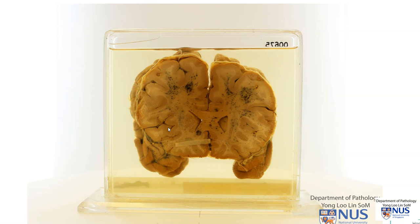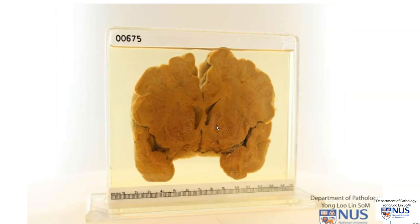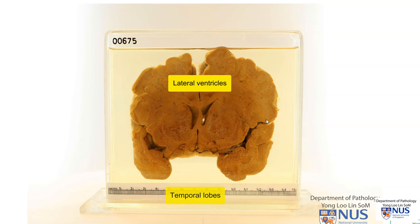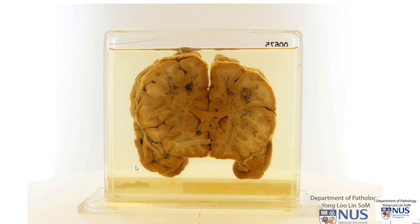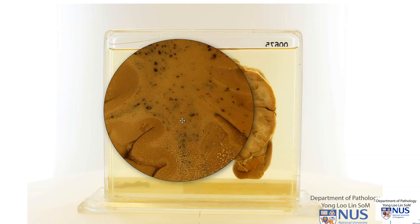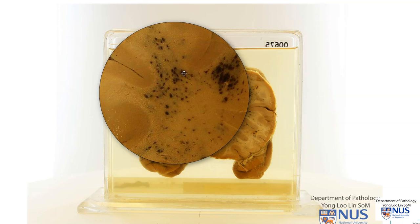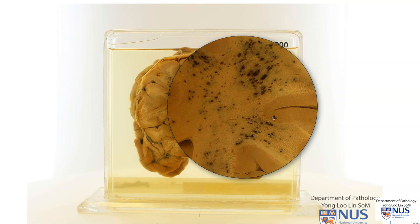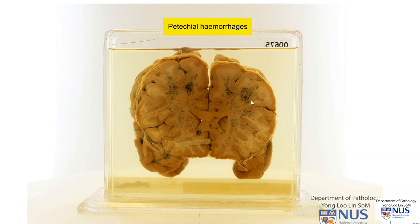Hello, this is a coronal section of the brain and we are looking at the cerebral hemispheres, the temporal lobes, and here we have the lateral ventricles. The pathology is actually more readily seen on this surface, and let me just magnify this a little. We are seeing these little blackish spots that occur mainly in the white matter in both cerebral hemispheres. What we are looking at are small petechial hemorrhages distributed throughout the white matter.